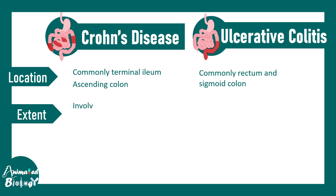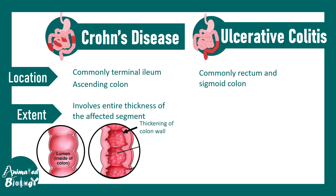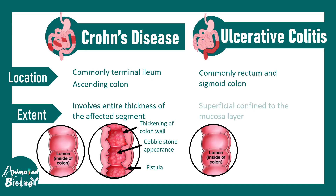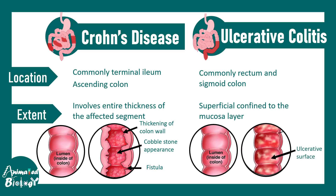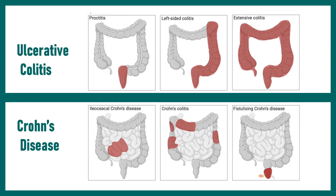Regarding extent: Crohn's disease affects the entire thickness of the gut wall — we can see thickening of the colon wall, a cobblestone-like appearance, and fistula formation, which are deep wounds. In ulcerative colitis, there is only superficial damage, meaning the mucus layer is mostly inflamed and involved.